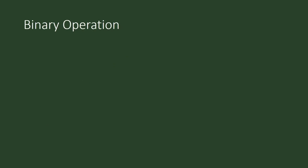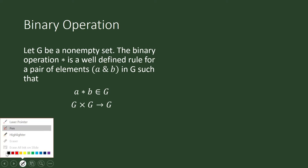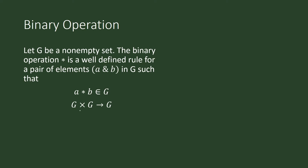In our previous video we spoke about the binary operation. Let g be a non-empty set. The binary operation star is a well-defined rule for a pair of elements a, b in g such that a star b is an element of g. We can also look at binary operation as a function — we are pairing elements of g cross g to another element of g, and the output depends on what star is supposed to do on those two elements.